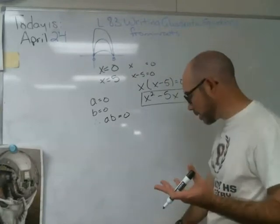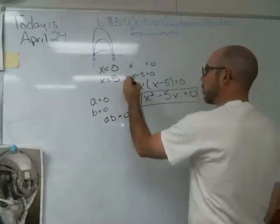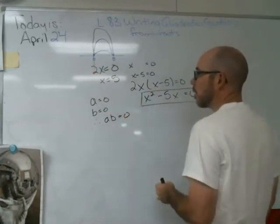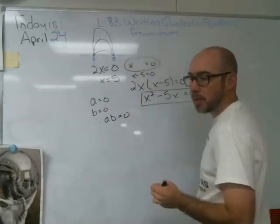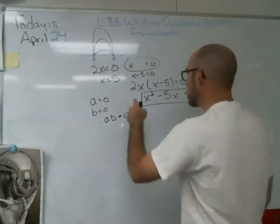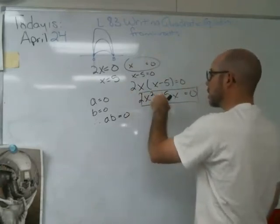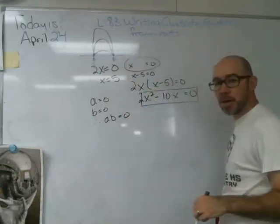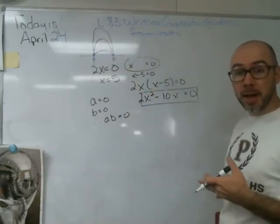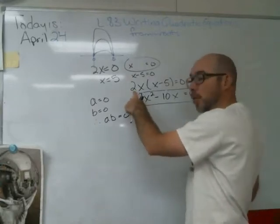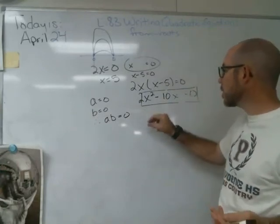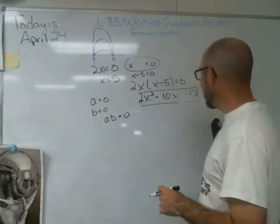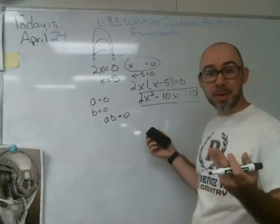The reason I say I don't know exactly is: what if this were 2x instead? Because 2x equals 0 still gives x equals 0 when you divide both sides by 2. So the equation might be 2x squared minus 10x, which still has the same roots but a different arch. I could keep changing that leading coefficient to 4 or 5 and come up with other quadratic equations that still have roots of 0 and 5. There are infinitely many such equations.